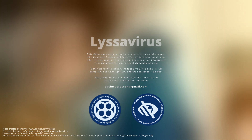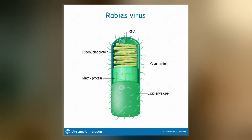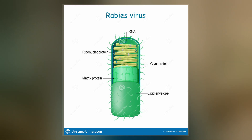Lyssavirus is a genus of RNA viruses in the family Rhabdoviridae, order Mononegavirales. Mammals, including humans, can serve as natural hosts. The genus Lyssavirus includes the rabies virus, traditionally associated with the disease of the same name.